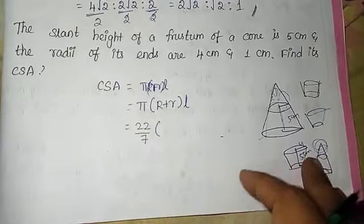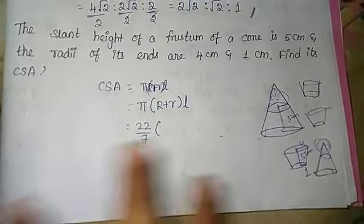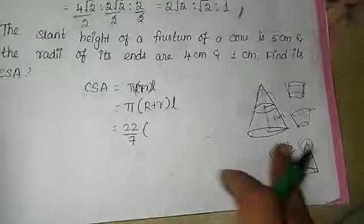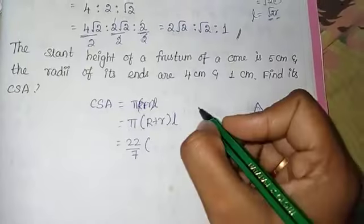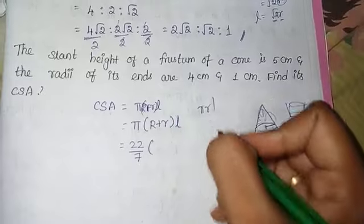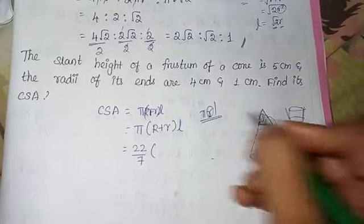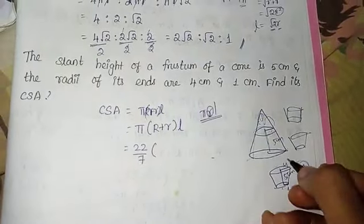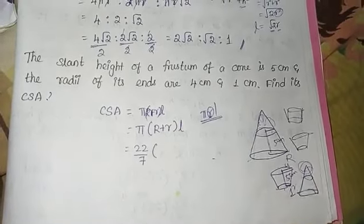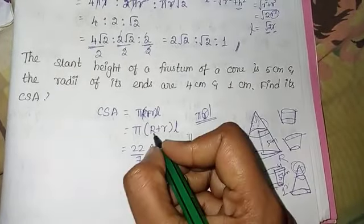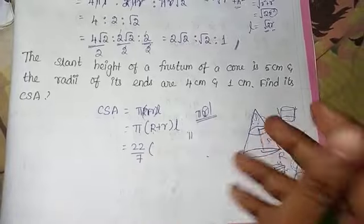We have curved surface area of the frustum of the cone. Now, the formula is π into capital R plus small r into l. Here we have radius, there are two radii. The larger radius is capital R, small radius is small r.